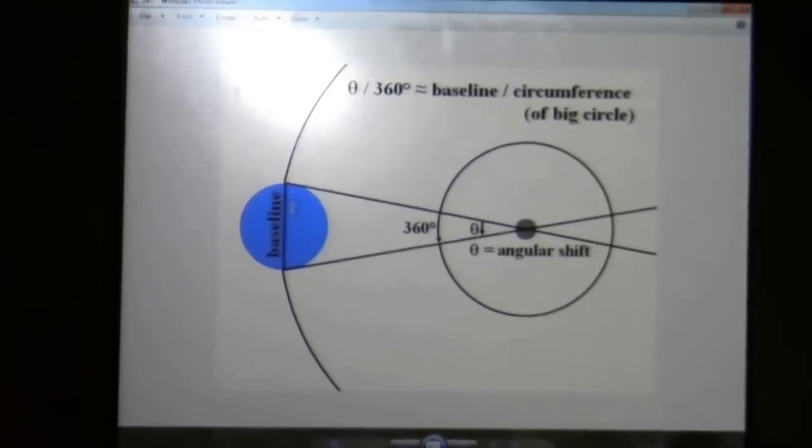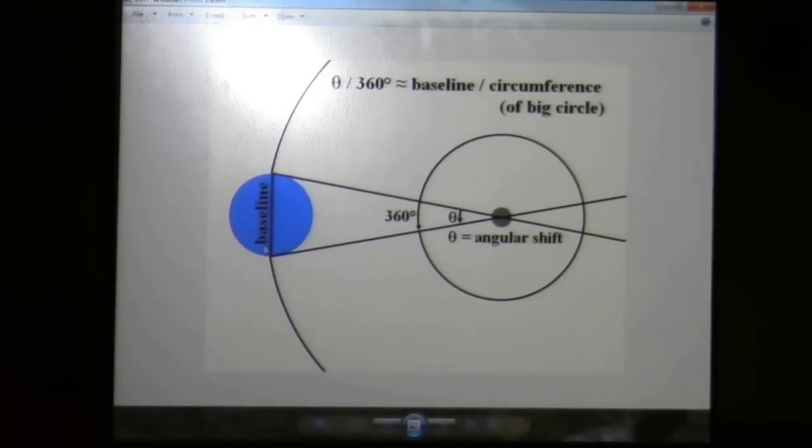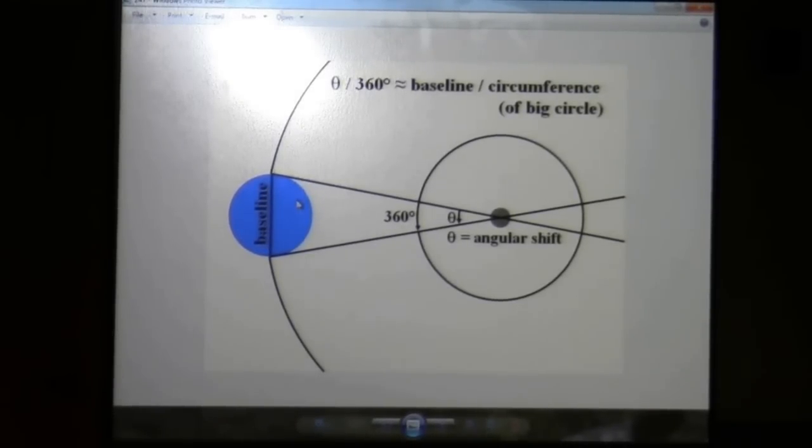Well the concept is, imagine drawing a giant circle centered on Venus, a circle that intersects the Earth. So you can think of this as an angle, as a fraction of 360, or a piece of the circumference of this big circle as a fraction of the whole circumference. In any circle you have 360 degrees. This angular shift is some fraction of a full 360 degrees, theta over 360. And that has to be the same fraction as this distance, the baseline, divided by the whole circumference of the big circle. Think of it as a giant pie, and you're taking a little sliver of pie. How much pie are you eating? You can measure it in an angle, that angle is some fraction of 360 degrees, that's the fraction of the pie that you took. Or you can measure it out on the circumference of the pie, the crust. And those have to be the same number.